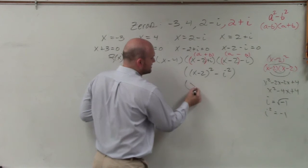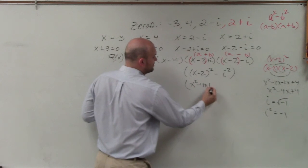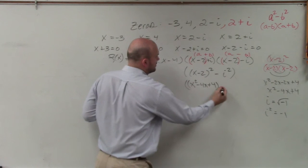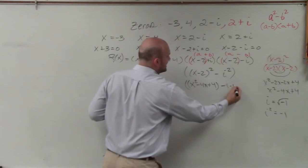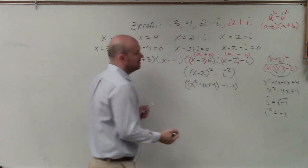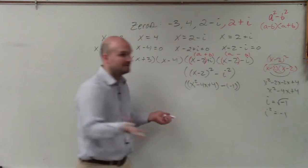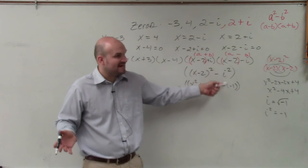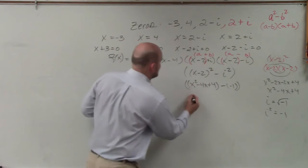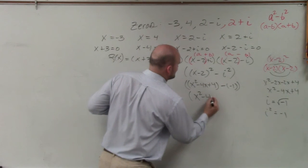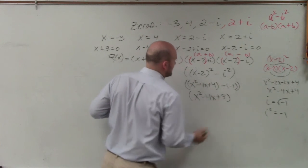So this is x² minus 4x plus 4 minus negative 1. Everybody agree? Now I can just combine—minus and negative is like adding—to give 5. So I could say x² minus 4x plus 5.